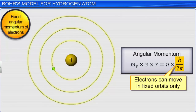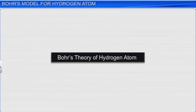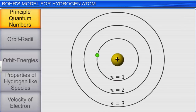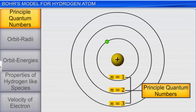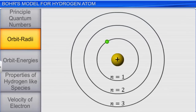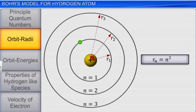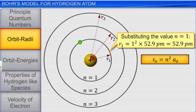Let us now get into more details of Bohr's theory of hydrogen atom. According to Bohr's theory, the stationary states for electrons are numbered n = 1, 2, 3, and so on. These integral numbers are called principal quantum numbers. The radii of stationary states or orbits can be given by the expression: the radius of the nth orbit, r_n, is equal to n squared multiplied by the constant a₀, which equals 52.9 picometers.